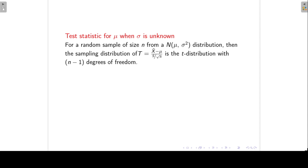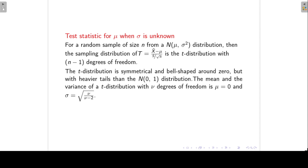The statistic t looks almost the same as the statistic z, except that we divide not by sigma over square root n but by s, the sample standard deviation, divided by square root n. The t-distribution is very similar to the standard normal distribution — it is also symmetrical and bell-shaped around zero, but it has heavier tails. The mean of a t-distribution with nu degrees of freedom is zero, and the standard deviation is the square root of nu divided by nu minus 2.